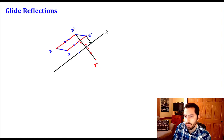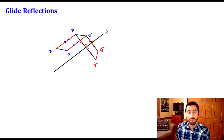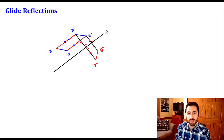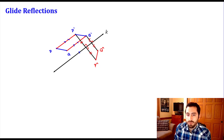I'll do the same thing for point Q. K ends up being the perpendicular bisector, so the two halves are equal to each other and they form right angles. That gives us Q double prime. In general, a glide reflection is a translation along a vector parallel to the line of reflection, followed by a reflection over that line.